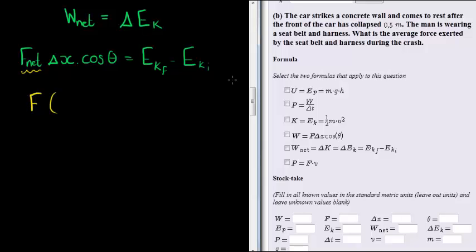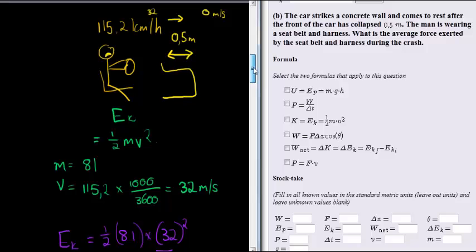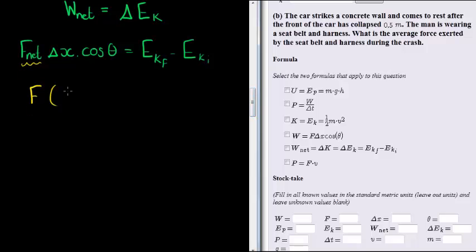F is what we're trying to calculate. We know that the displacement is simply that if this car scrunched up for 0.5 meters, then this man is not traveling any more than 0.5 meters because he's wearing a seat belt. So that is simply 0.5 meters.